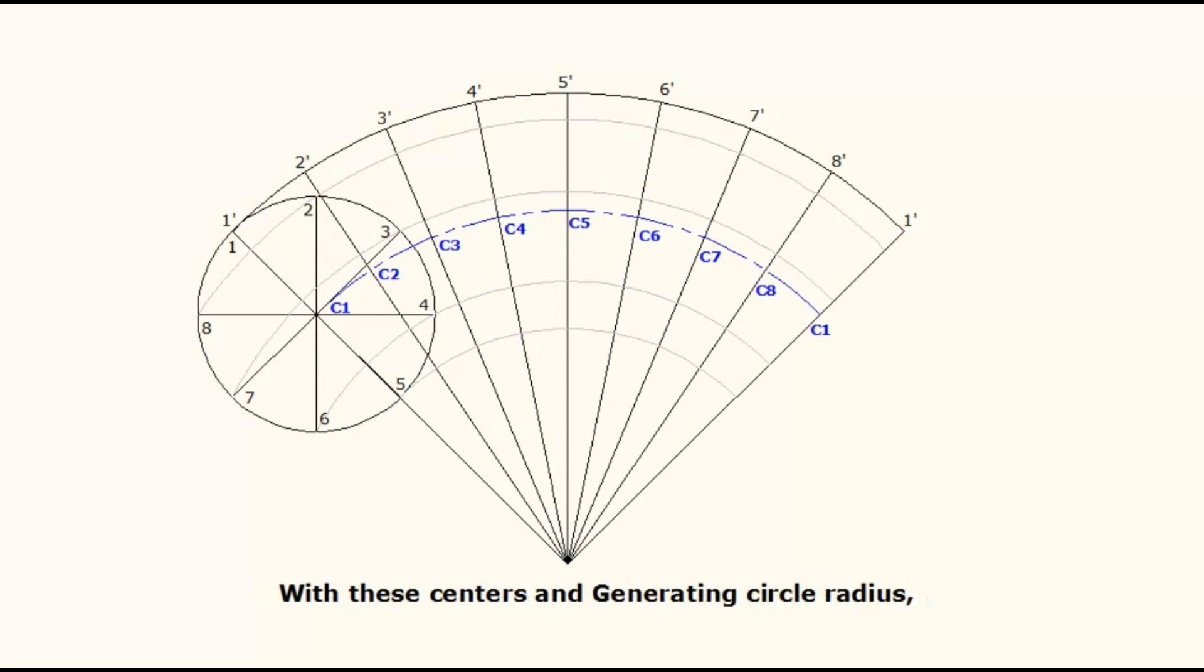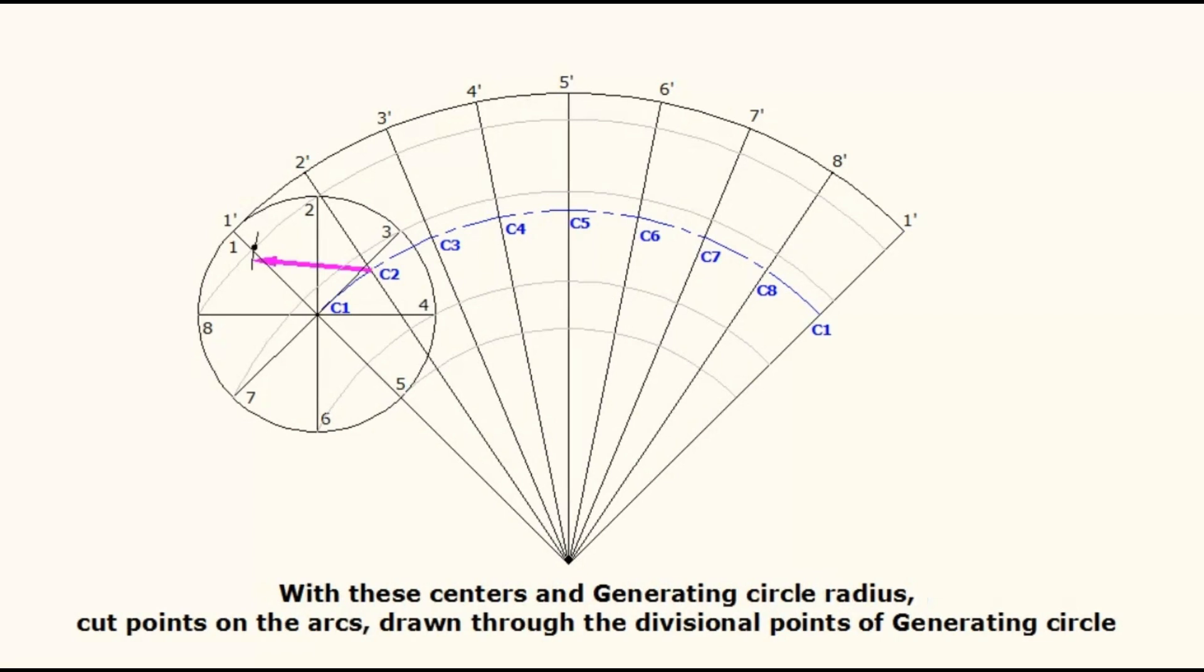Now, with each of these center points and with the radius of generating circle, cut points on the arcs drawn through the corresponding divisional points of generating circle. From C2 as center on the arc drawn through point 2, C3 as center on the arc drawn through point 3, C4 as center on the arc drawn through point 4, up to point 8.